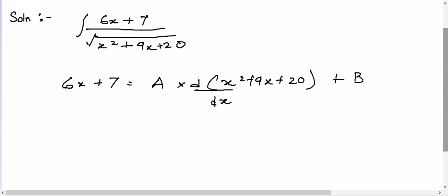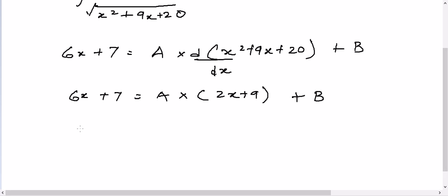So what we'll get? 6x plus 7 is equal to a into differential, 2x plus 9, right, plus b. So it will be 6x plus 7 is equal to 2ax plus 9a plus b. Now we'll compare the coefficient. The coefficient of x here is 2a and here it is 6. So 6 is equal to 2a. That means a is 3, right?